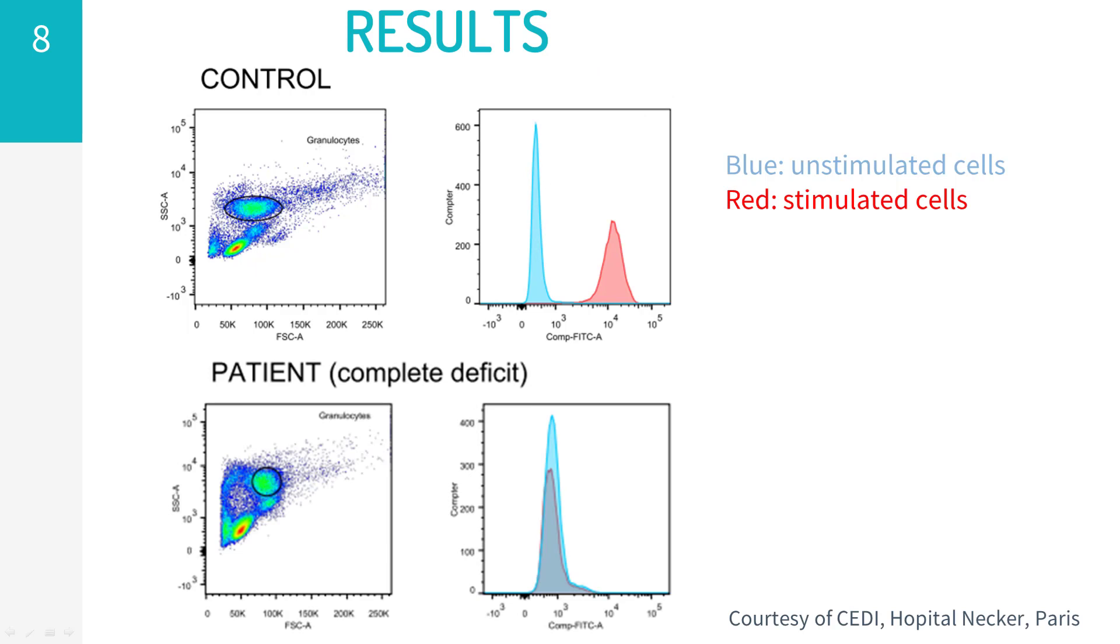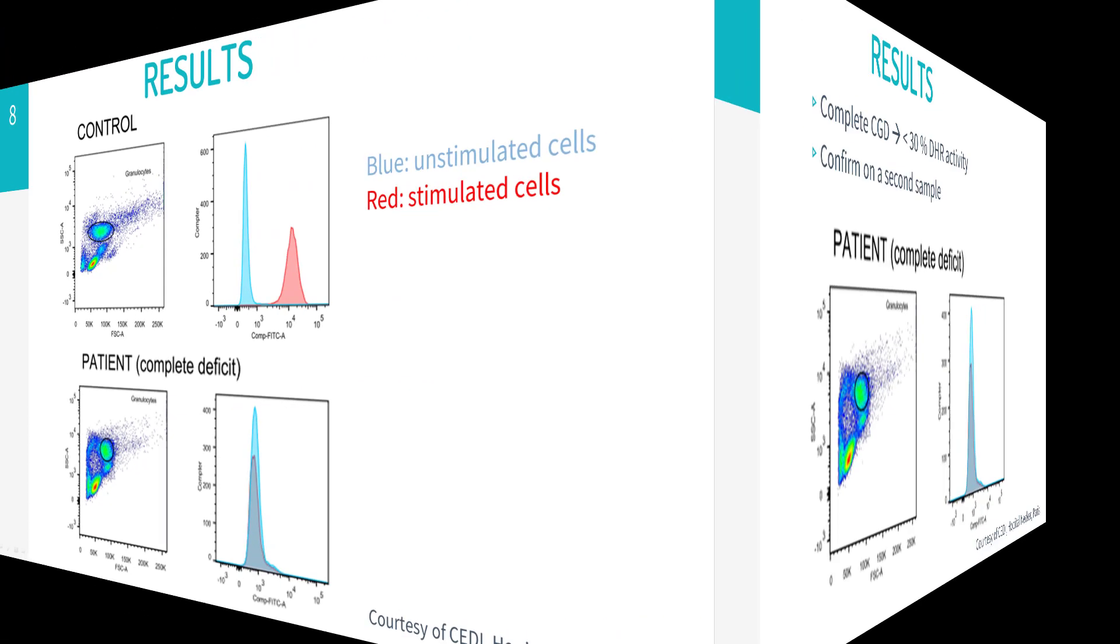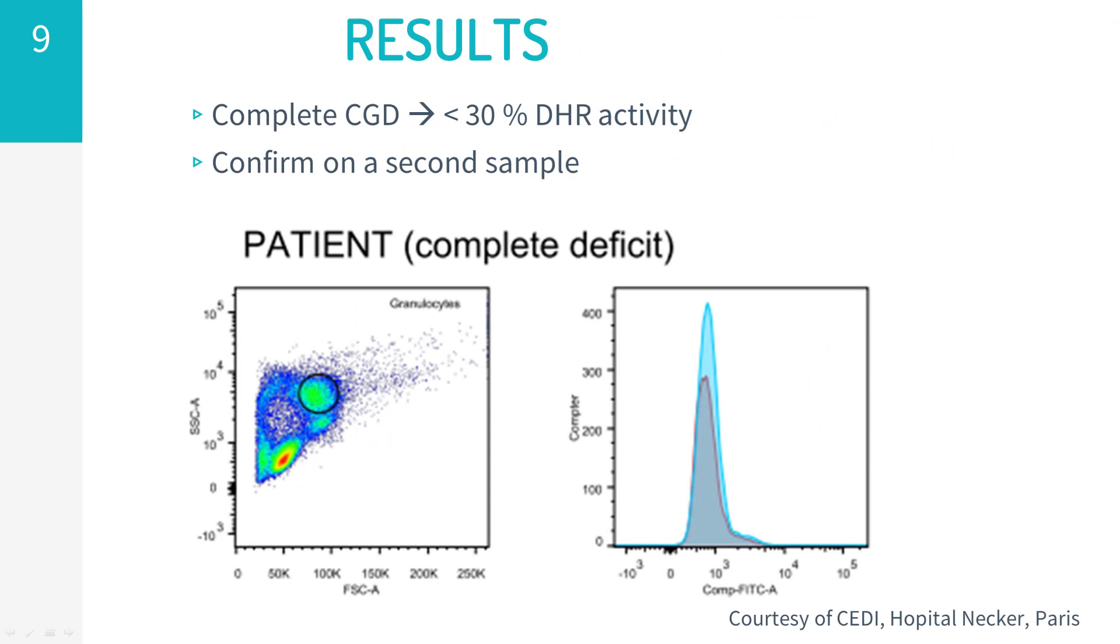Here, we can see the result from a patient with complete absence of NADPH oxidase activity, causing a complete or classical form of chronic granulomatous disease. As you can see, upon stimulation, the neutrophil cells do not have the ability to oxidize DHR and retain the same fluorescence as the unstimulated cells. A diagnosis of CGD can be established when less than 30% of the cells are positive. However, since this finding has significant clinical implication, it's imperative to confirm the diagnosis on a second sample taken on a different occasion.